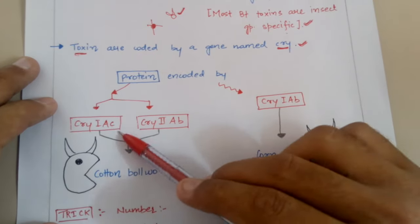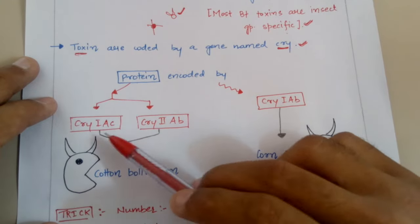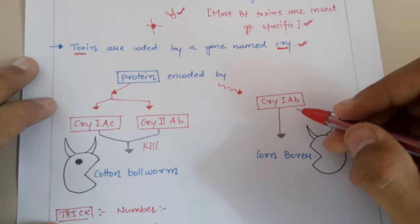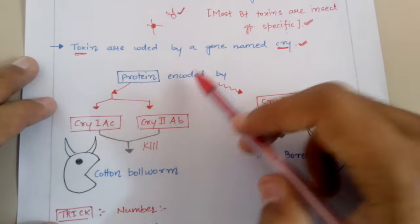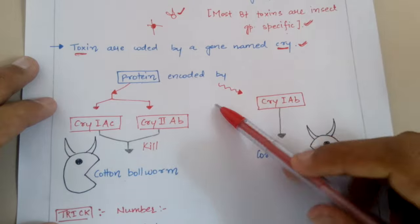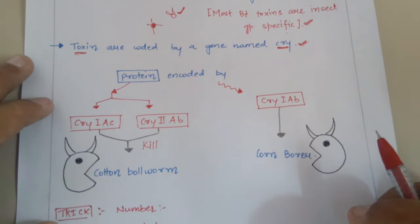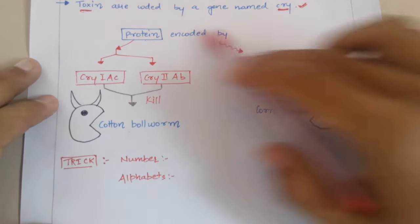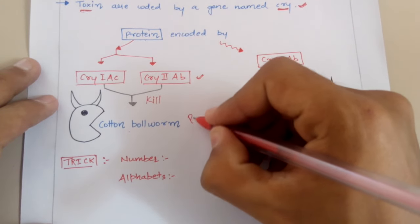There are some cry genes — for example, cry1AC and cry2AB. These two cry genes kill the cotton bollworm. The proteins encoded by cry1AC and cry2AB kill cotton bollworm, and the proteins encoded by cry1AB kill the corn borer.